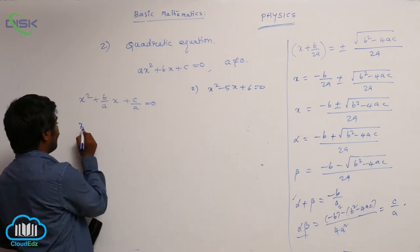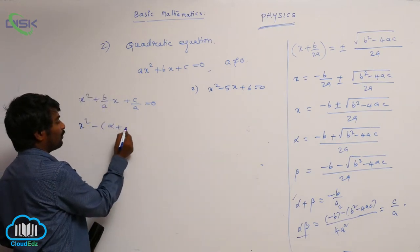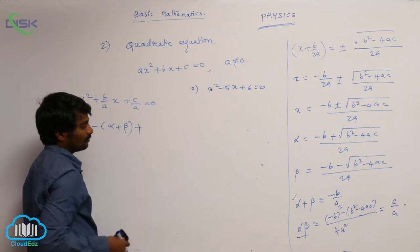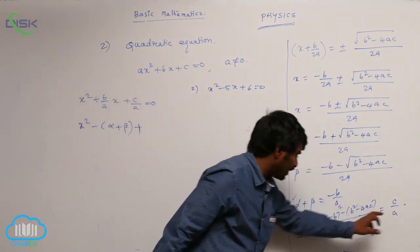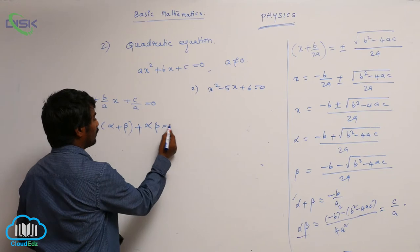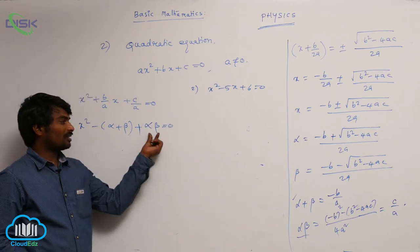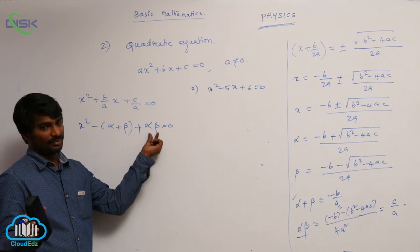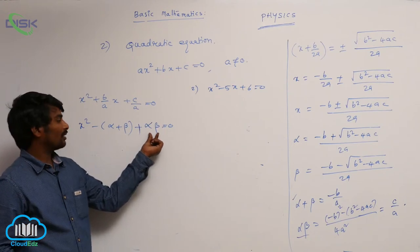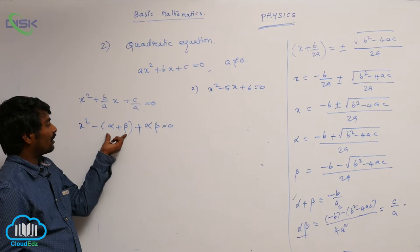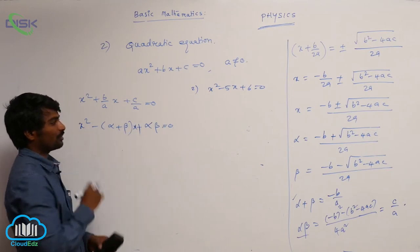So instead of b by a I can write it as alpha into beta equal to 0. That means this last term is sum of product of two roots. Then we can write this second term as sum of two roots.